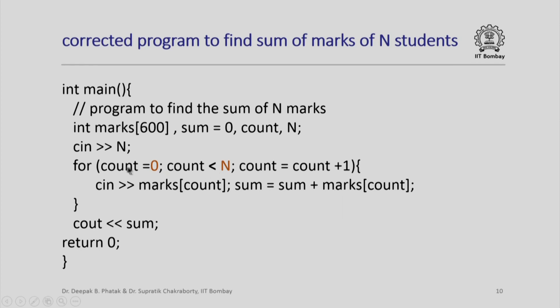So observe that by setting count equal to 0, count less than n, we automatically convert the same iteration control into a different starting point and a different ending point. Notice that now when count is used as an index, it will move correctly from 0, 1, 2, 3, 4 up to n minus 1, thus reading the first n marks into the first n elements of the array, and this will find the sum correctly.